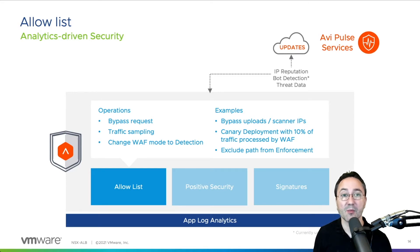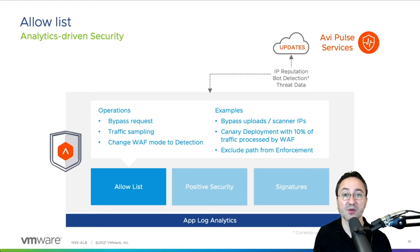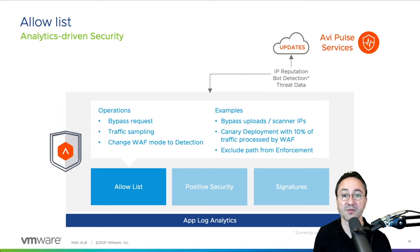Here are a couple of examples where the allow list will be in good use. First, if you want to bypass traffic from being checked by the RAV policy, this could be done for static resources or, for example, upload paths where clients can upload gigabytes of data. So instead of running a file upload through the RAV policy, it should be checked by the iCAP connected scanner before it hits the RAV processing. This is explained in another video.